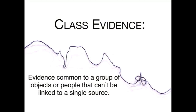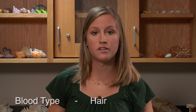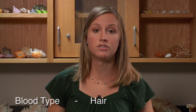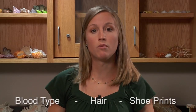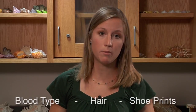Class evidence is evidence that is common to a group of objects or people and cannot be linked to a single source. Fiber evidence is a great example of class evidence because you can never link it to a single source. Other examples include blood type evidence, hair evidence where you don't have the root which contains DNA, or shoe prints when you don't have individualizing wear patterns.